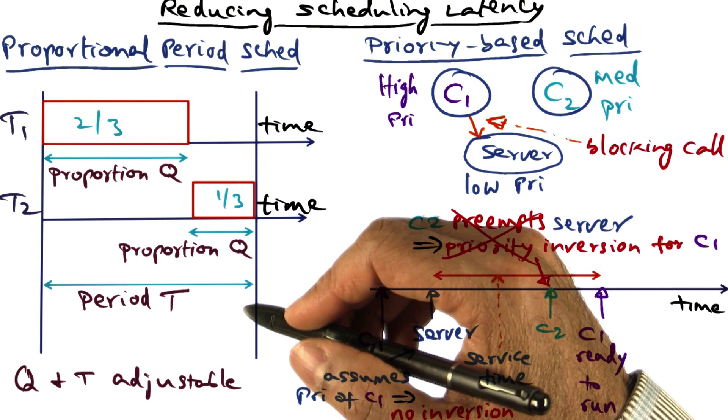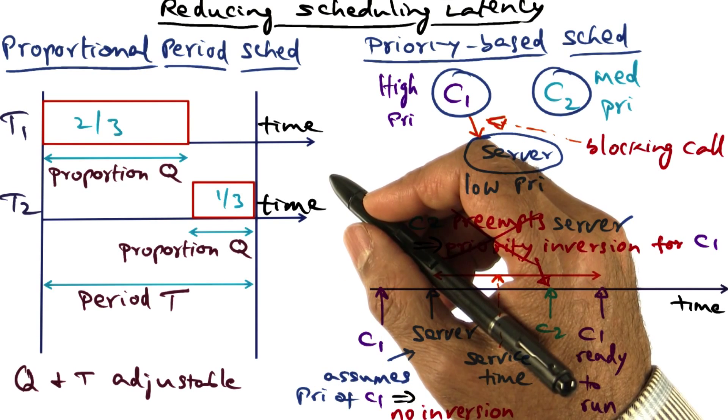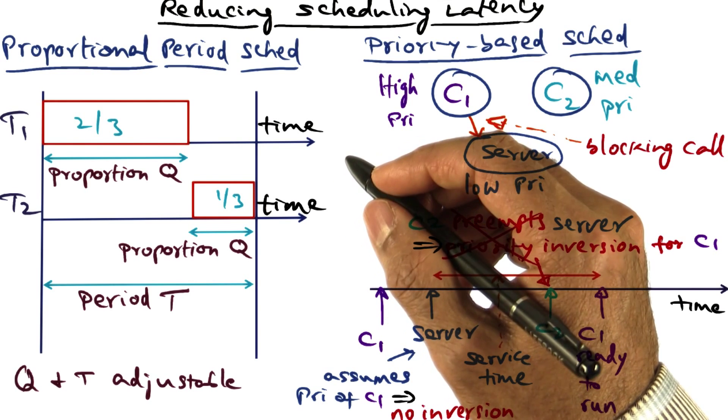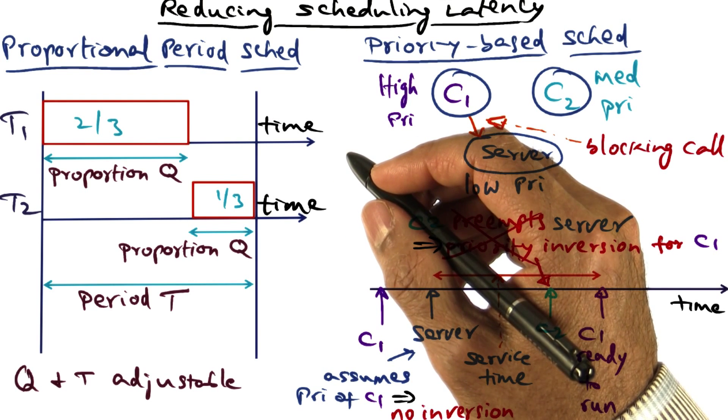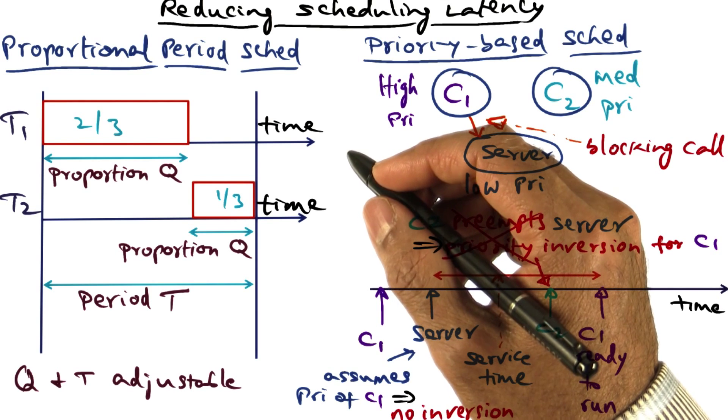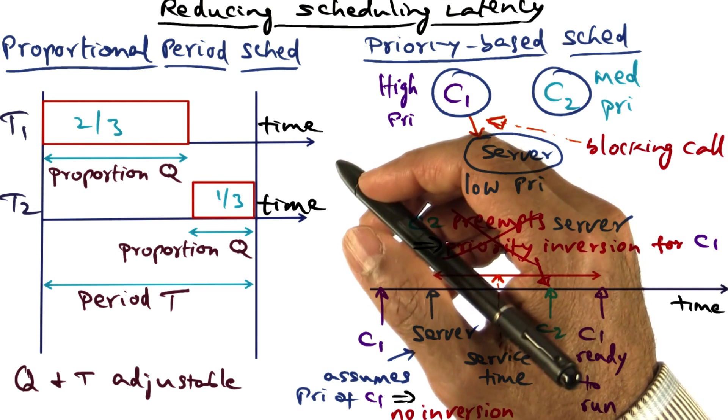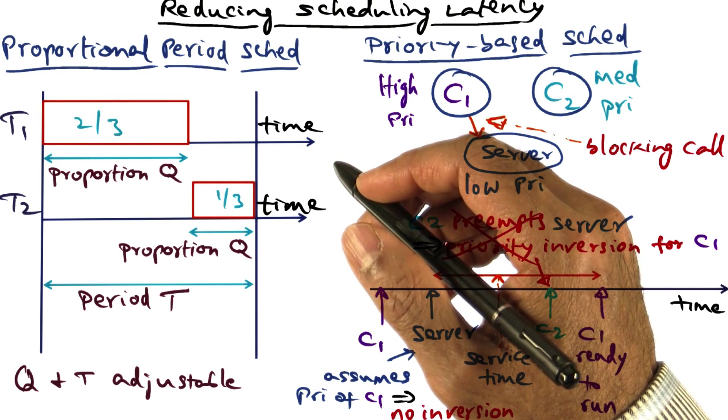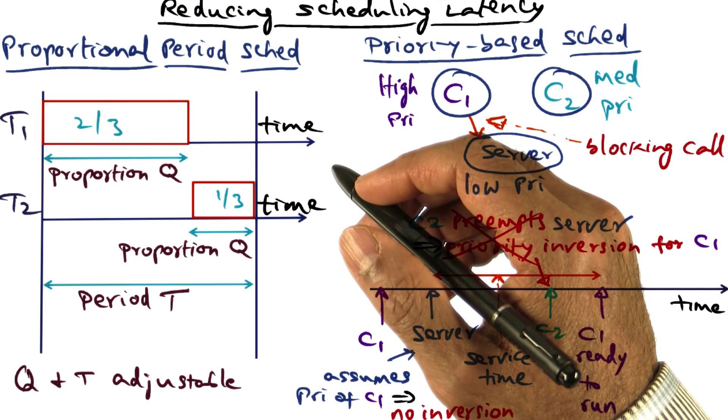Those are the ways by which the distance between event happening and event activation can be reduced, and we can get good performance for time-sensitive applications, even though the operating system is a commodity operating system like Linux.